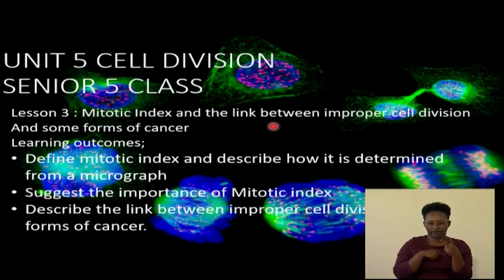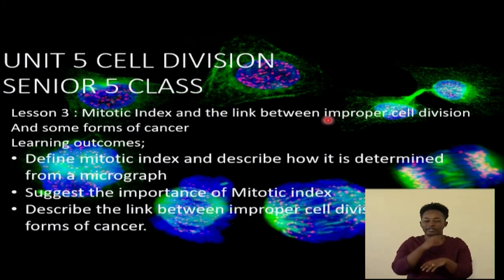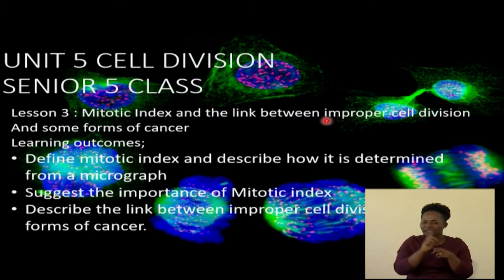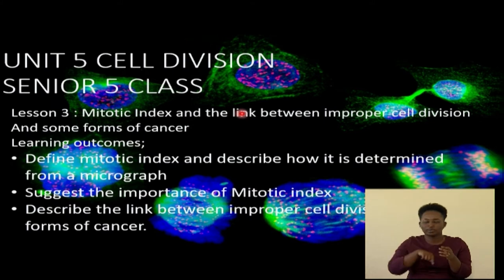We are also going to look at what happens if things go wrong — when cell division does not occur in the expected way. Where do we head to? Do we constantly have time bombs in our bodies that can end up causing some forms of cancer?